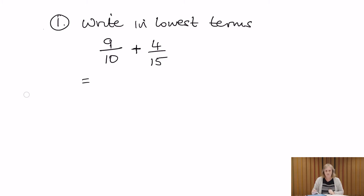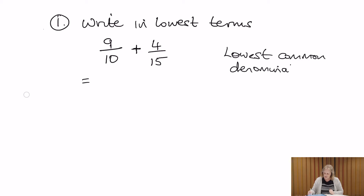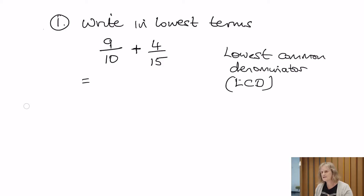With this question, what we've got to do is find the lowest common denominator — you'll see that written out as 'lowest common denominator,' abbreviated to LCD. All that means is we're just looking at the bottom number of the fraction. The top number of a fraction is what we call the numerator, and the bottom number is the denominator. So it's just the denominator we're looking at here for the first step, where we want to find the lowest common denominator of these two fractions — looking at 10 and 15 and their multiples.